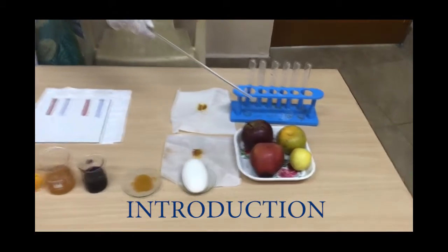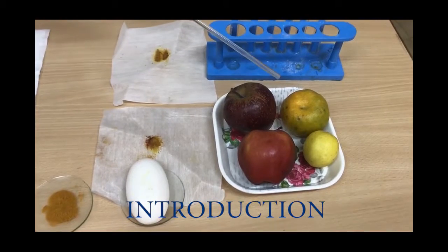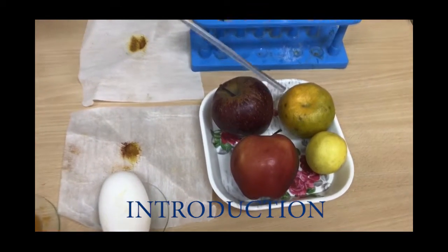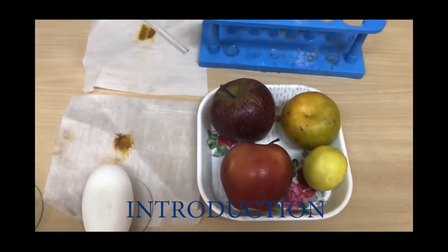Every day we eat a number of fruits. The fruits which we eat, like apple and orange, contain malic acid and citric acid. How can we prove that these fruits contain acids in them?